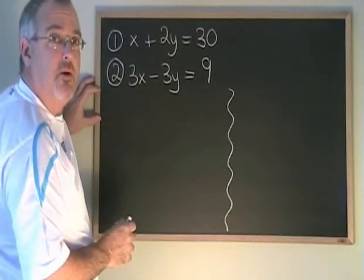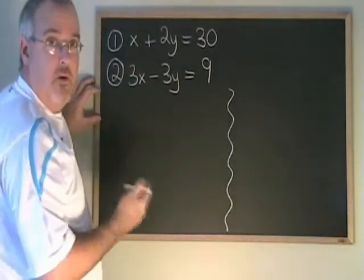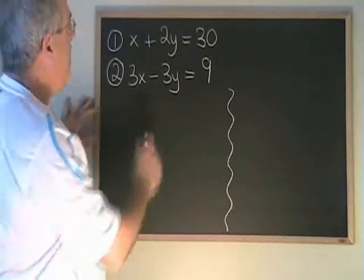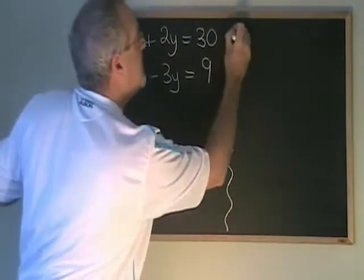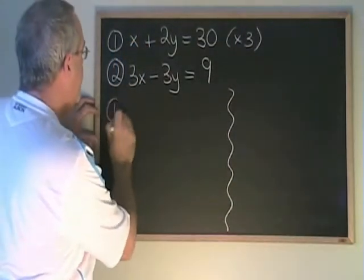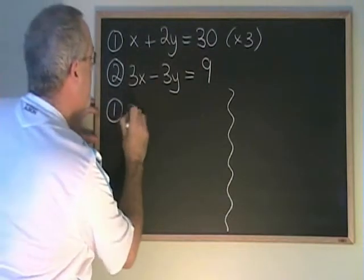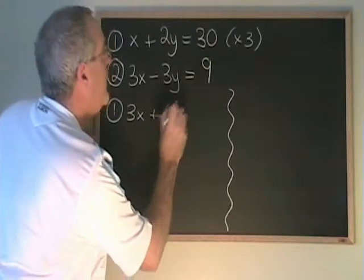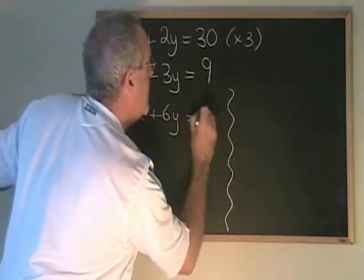So what we'll do is we will try to turn these equations into two equivalent equations that have plus 6y and minus 6y. The way to turn plus 2 into 6 is to multiply it by 3. That gives us 3 times 2y is plus 6y, and 3 times 30 is 90.